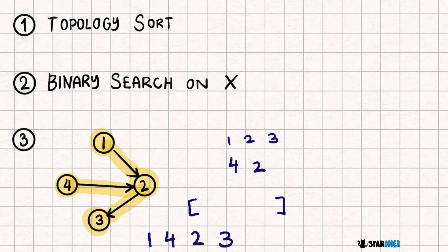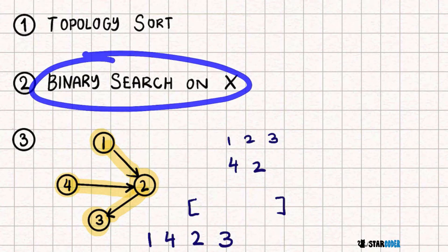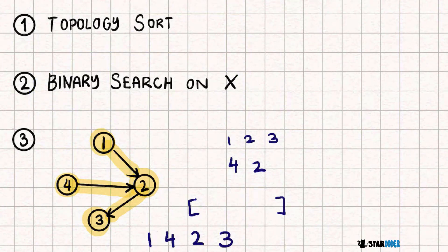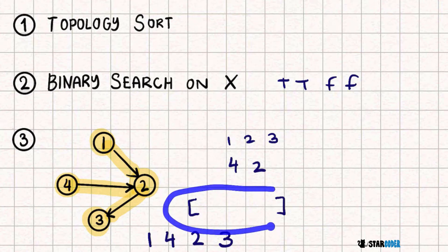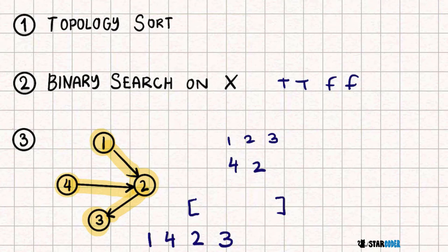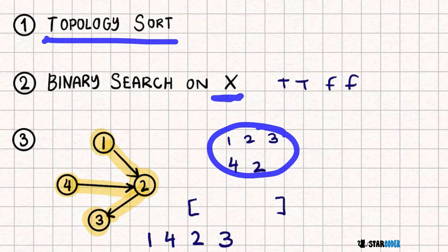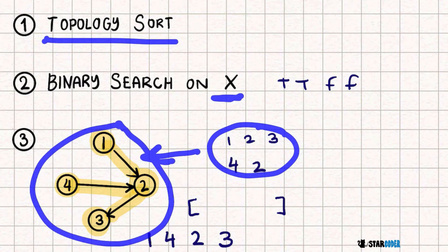The other part of the question asks for x — the number of statements we use. Before building the graph, we do a binary search on x. Since fewer statements make the graph more likely to work, and more statements make it less likely, the pattern is true, true, false, false. We binary search to find the greatest valid x. Since we're using a priority queue, we don't need to worry about lexicographic order separately. For each mid value in the binary search, we run a topology sort on the first x statements turned into a graph, and get our lineup.